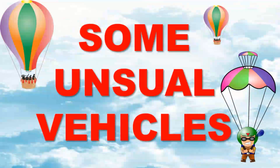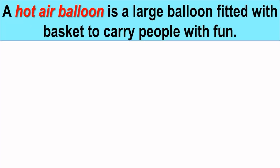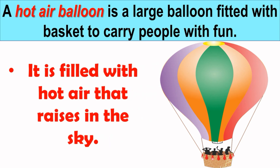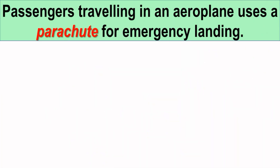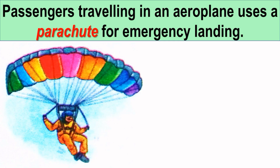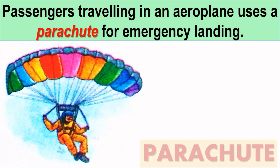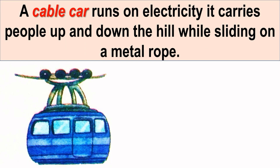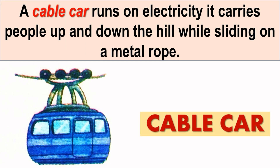Now let's see some unusual vehicles. A hot air balloon is a large balloon fitted with a basket to carry people for fun, as you can see in this picture. It is filled with hot air that rises in the sky. Next is a parachute — passengers travelling in an aeroplane use a parachute for emergency landing. Next is a cable car. A cable car runs on electricity and carries people up and down the hill while sliding on a metal rope.